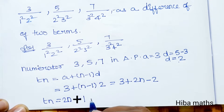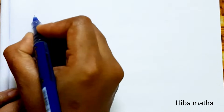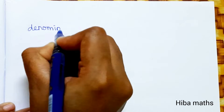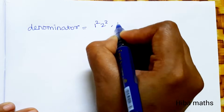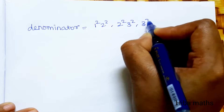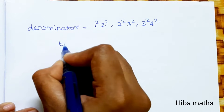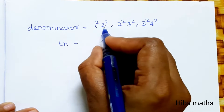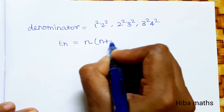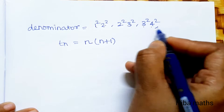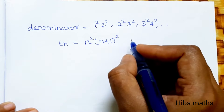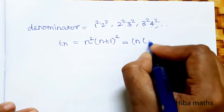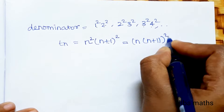Now for the denominator: the pattern is 1²·2², 2²·3², 3²·4². So the nth term of the denominator is n²·(n+1)². Therefore the full nth term is tₙ = (2n+1) / [n²·(n+1)²].